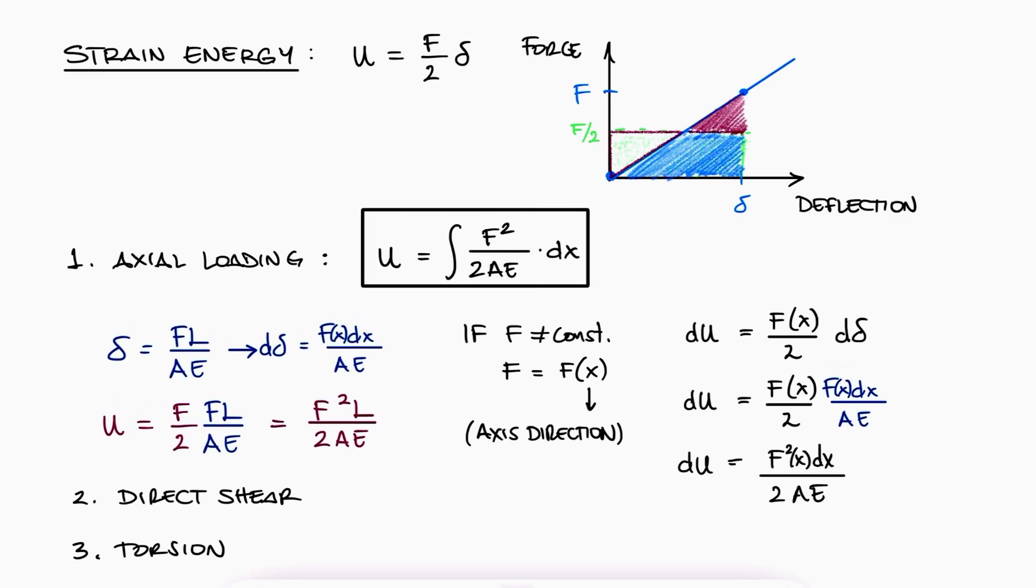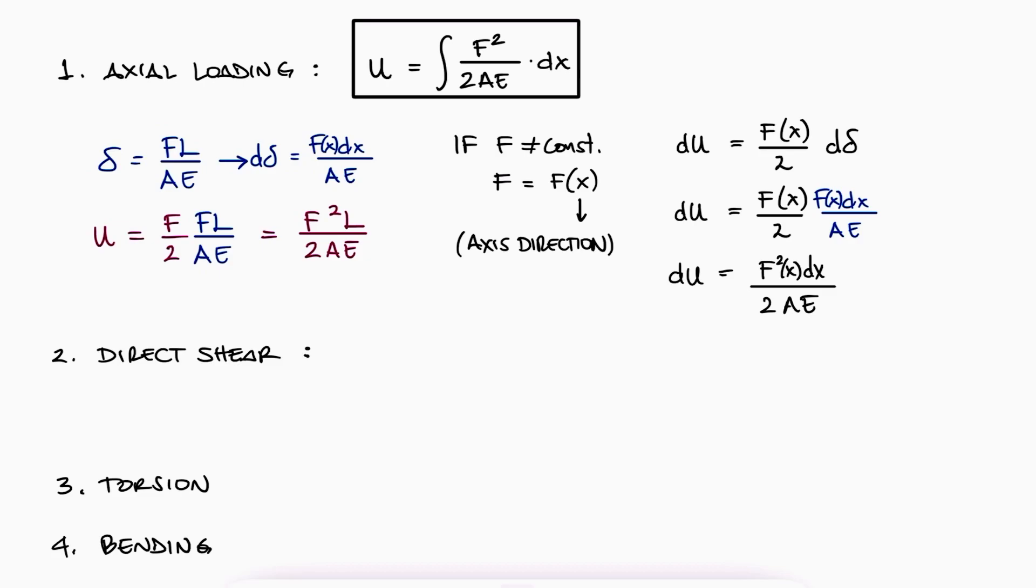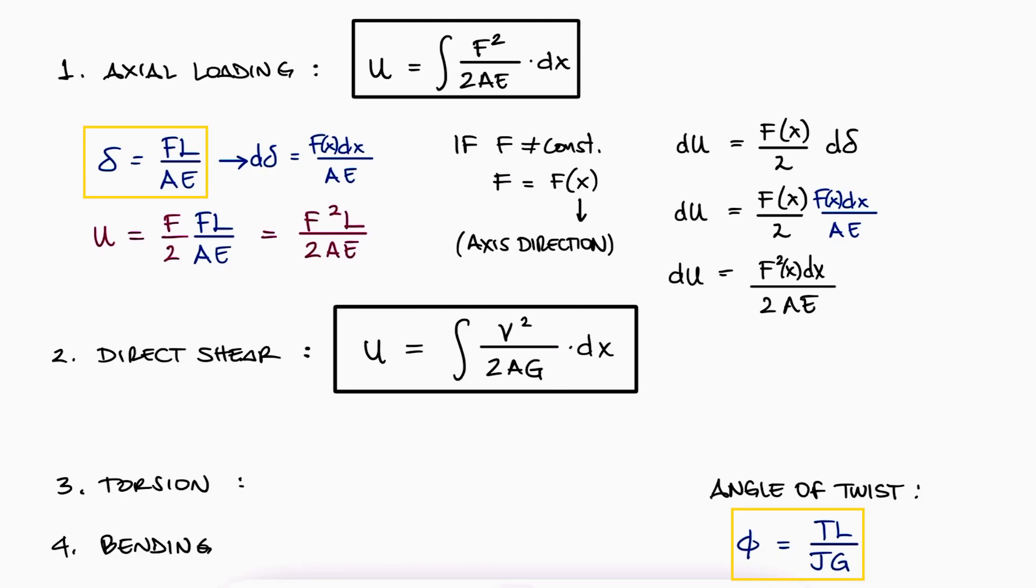The process would be almost identical for direct shear, where we use the variable capital V as the force to indicate that it's a shear force. Of course, in this case, the elastic modulus E would also be replaced by the shear modulus or the modulus of rigidity G as shear forces are related to shear strains by G. If we use the expression for angle of twist that we derived in another video, and carry out the same process we did using the axial loading deformation expression, we would find the expression for the strain energy of torsion.